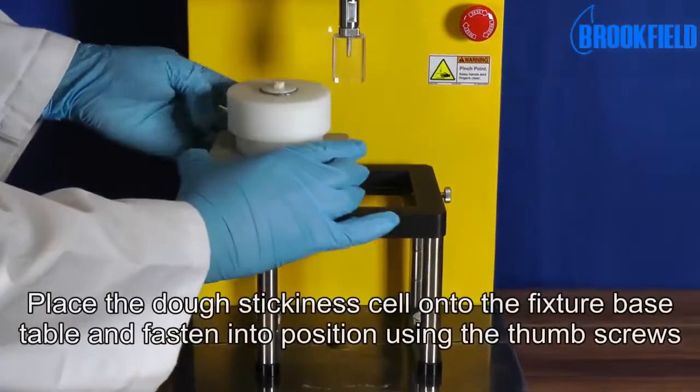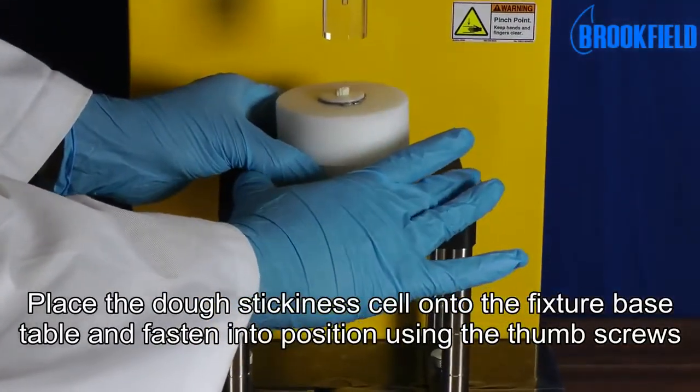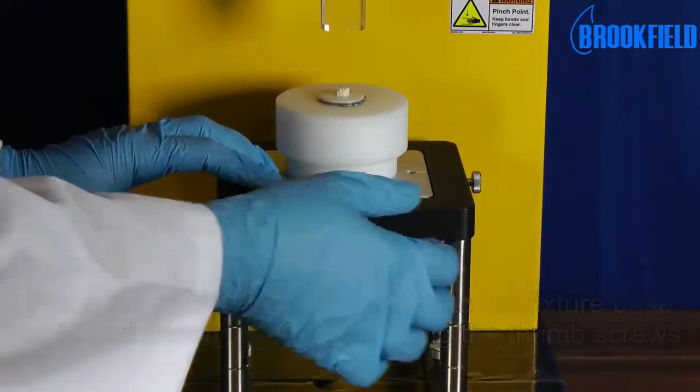Place the dough stickiness cell onto the fixture base table and fasten into position using the thumb screws.